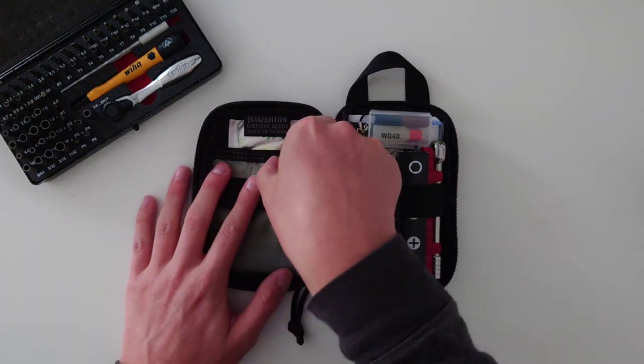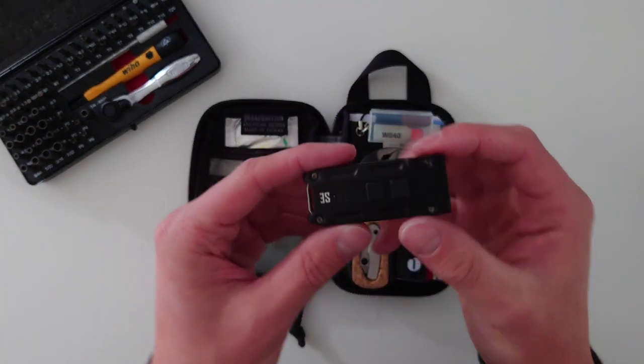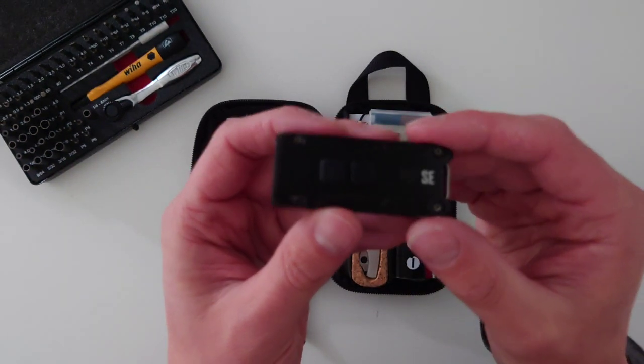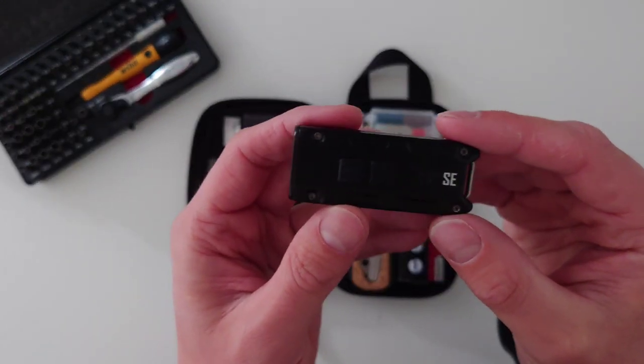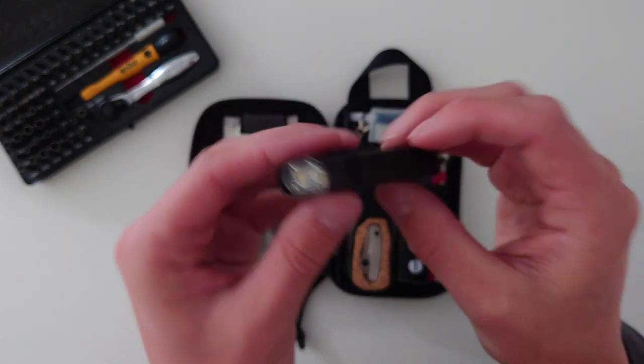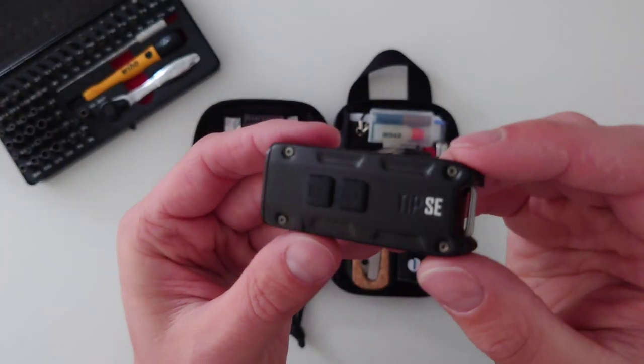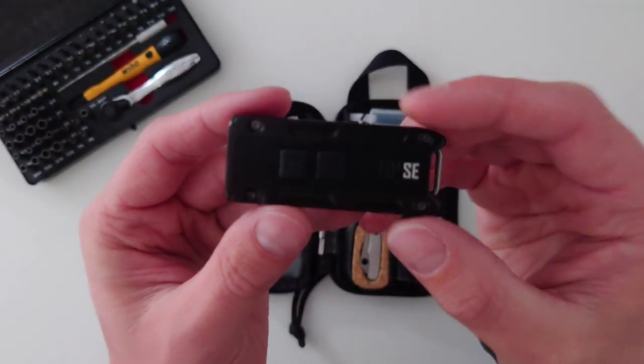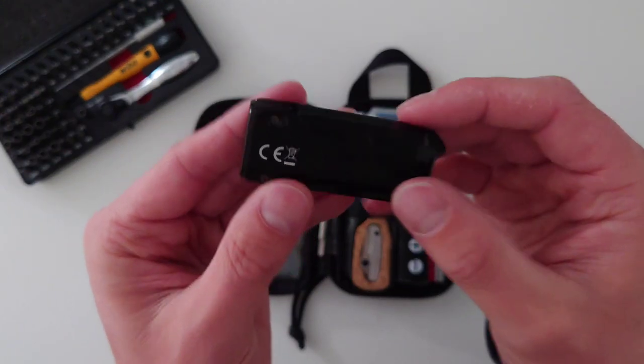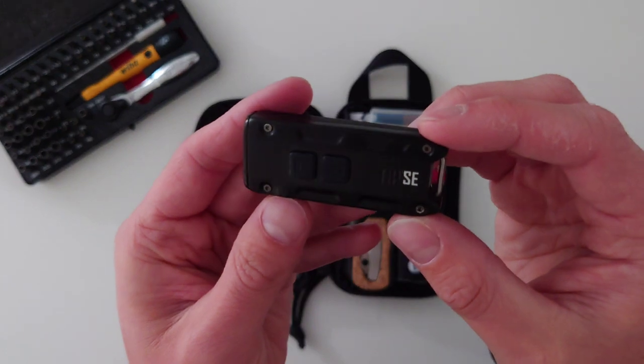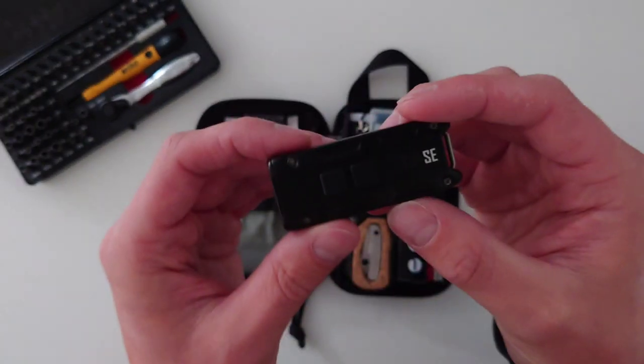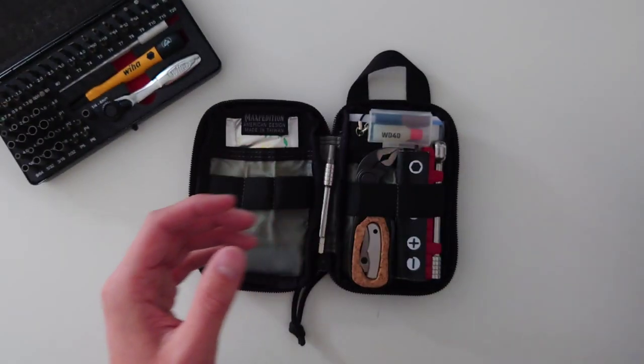The next item is the Nightcore Tip SE. I did originally have a tip torch but I just found it absolutely amazing that you could get up to 700 lumens out of this little thing. At 700 lumens the battery life is going to be fairly appalling, but it's good to be able to have that and it's come in handy quite a few times.